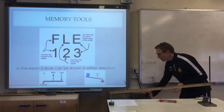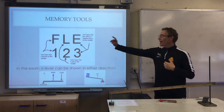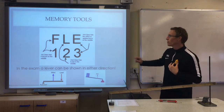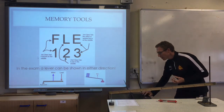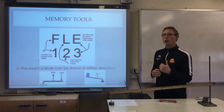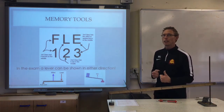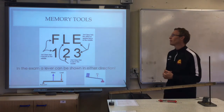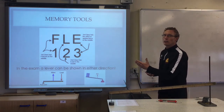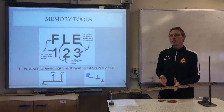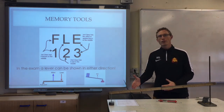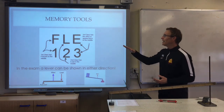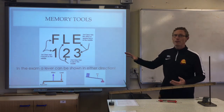There is another way to remember them and that is F, L, E — one, two, three. The F is the middle letter for a first class lever, so the fulcrum is in the middle and you can have the load or effort at either end. L for load: on the second class lever, the load is in the middle with effort and fulcrum at either end. And E: the third class lever has the effort in the middle.